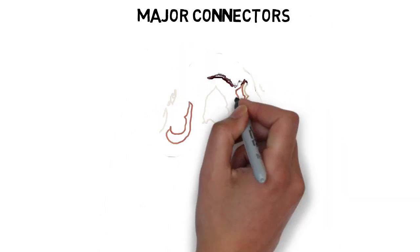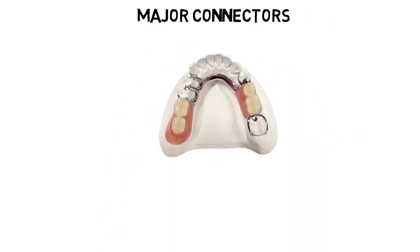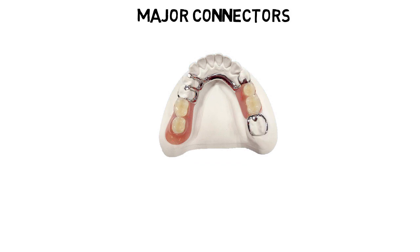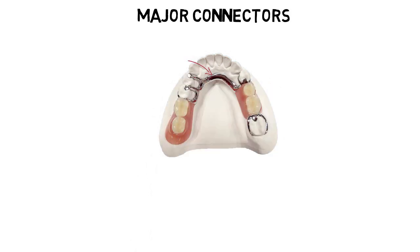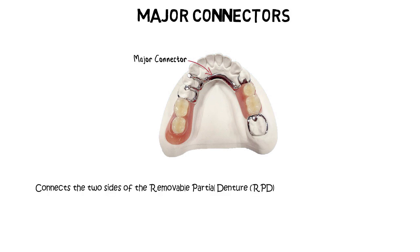For a removable partial denture to have ideal and optimum stability, it needs to extend to both sides of the arch. By extending to both sides, the RPD can effectively distribute the functional forces being applied on any part of the denture. For doing that, there needs to be a connection between the right and left side of the denture, and the component that provides this connection is known as the major connector.